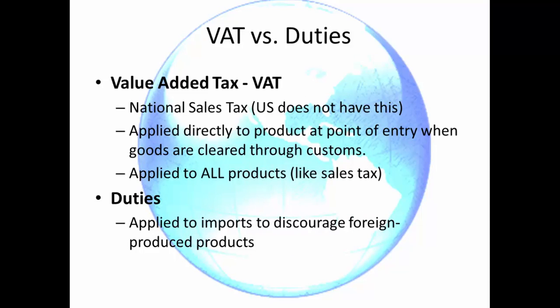VAT — value added tax — is like a national sales tax, and the US doesn't have this, but many countries do. Even when you are traveling and have purchased items, if you keep your receipts, you can often get some of your national sales tax back as you are leaving to return to the United States. VAT is applied directly to products at the point of entry when goods are cleared through customs, and it applies to all products, like a sales tax.